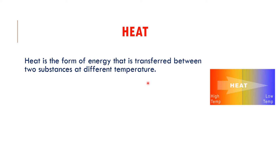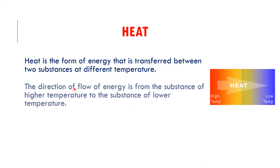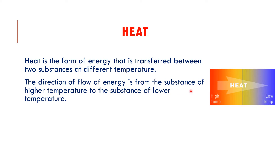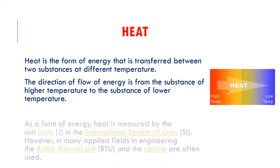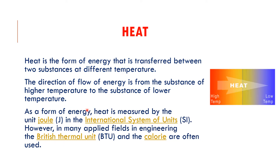Heat is the form of energy that is transferred between two substances at different temperatures. The direction of flow of energy is from the substance of higher temperature to the substance of lower temperature — that means energy transfer between two substances of different temperature is heat. As a form of energy, heat is measured by the unit Joule (J). In many applied fields and engineering, the British Thermal Unit (BTU) and the calorie are often used.